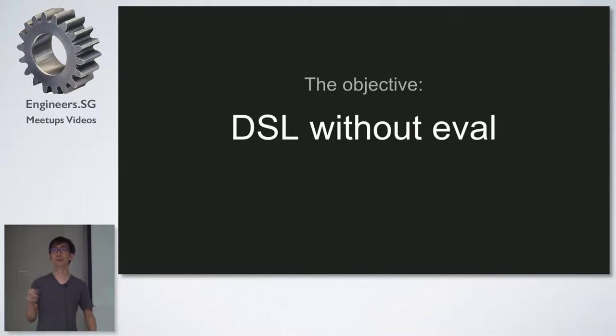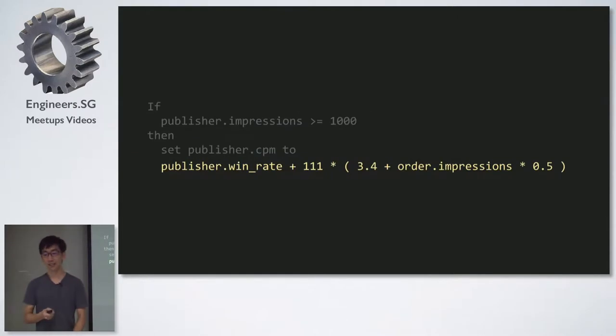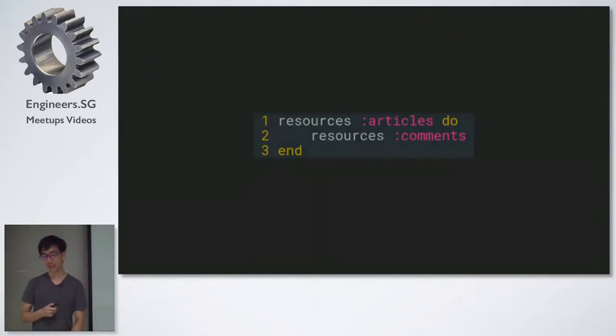We'll set our objective to be implementing a DSL without using eval or instance eval in Ruby. DSL is basically domain-specific language. An example, if you guys use Rails, you would have seen this before. You declare resources articles, which has comments as its nested resources. This is a form of domain-specific language.